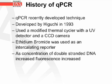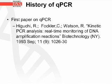Now let's go over a brief history of qPCR. QPCR is a recently developed technique — it was developed by Higuchi in 1993. He used a modified thermal cycler with a UV detector and a CCD camera. Ethidium bromide was used as an intercalating reporter dye, and as the concentration of double-stranded DNA increased, so did the fluorescence. On this slide is the reference information for the first paper on qPCR. This is the end of session one.